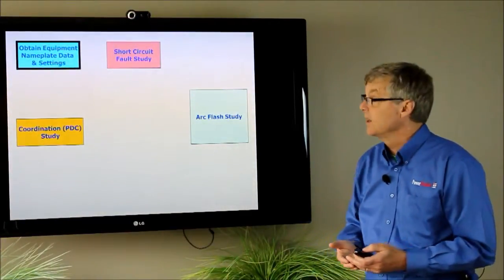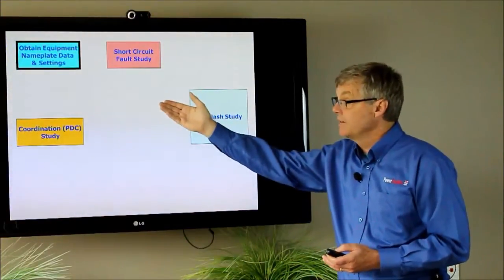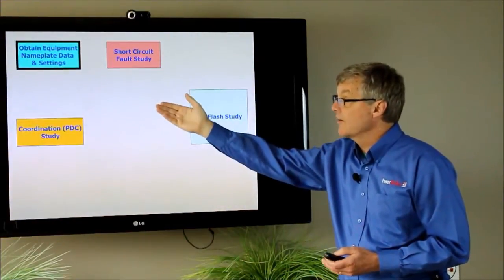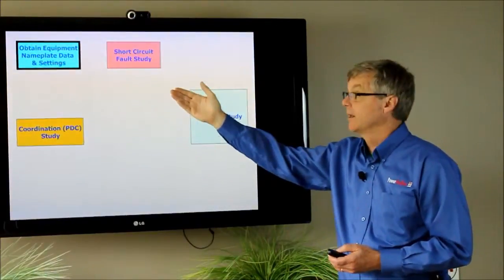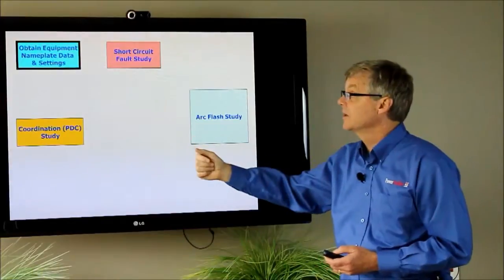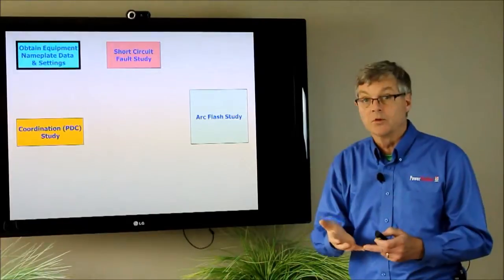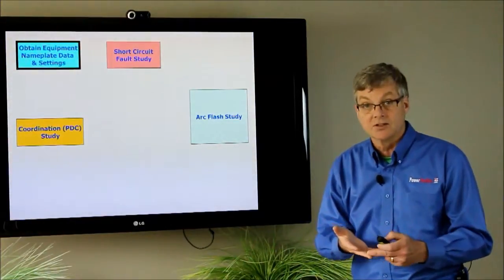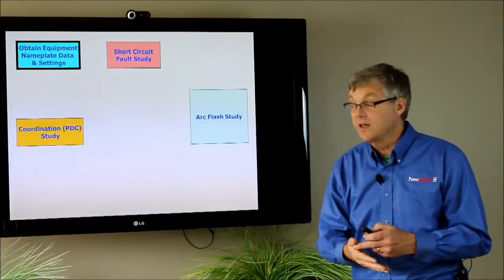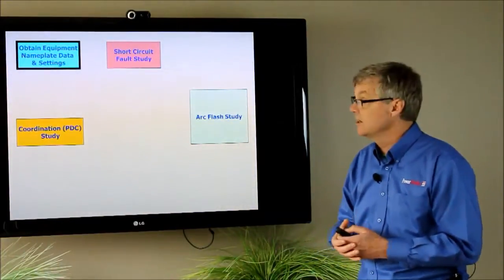What we have to do is go to each piece of electrical equipment and read the nameplate data and also look at the protective devices and get their nameplate data and their protective device settings. We need to know for instance the size of the transformers, the impedances, the conductor sizes, the lengths, the number per phase - all this information needs to be gathered in a detailed fashion.